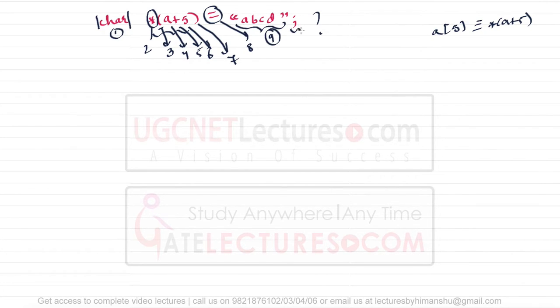This entire string is one single token, so it is the ninth token, and the semicolon is the tenth token. So in this statement there are 10 tokens present. Now let us take the second example: a printf statement.